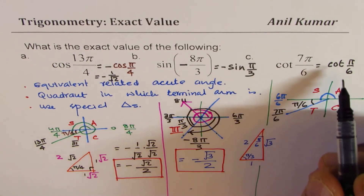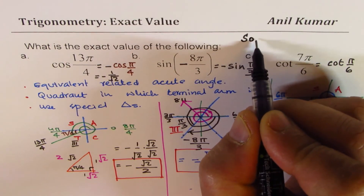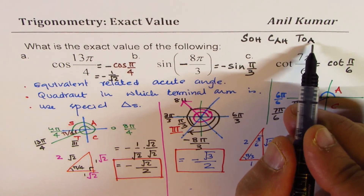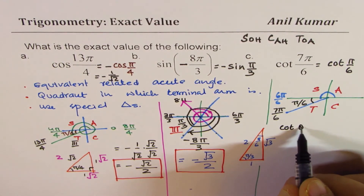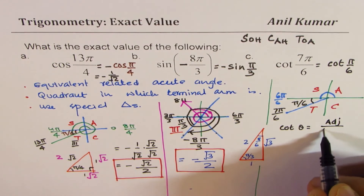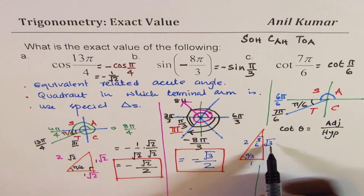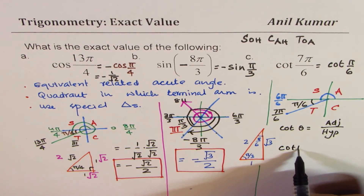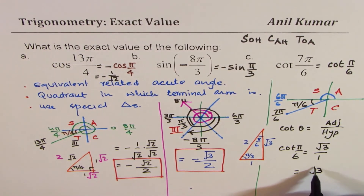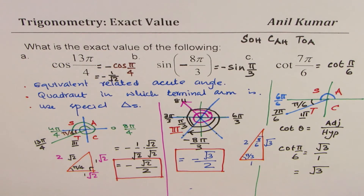Using the special triangle: cot(θ) = adjacent over opposite. Looking from the angle π/6, the adjacent side is √3 and the opposite side is 1. So cot(π/6) = √3/1 = √3. Since we are in Quadrant 3 where cotangent is positive, the final answer is √3.